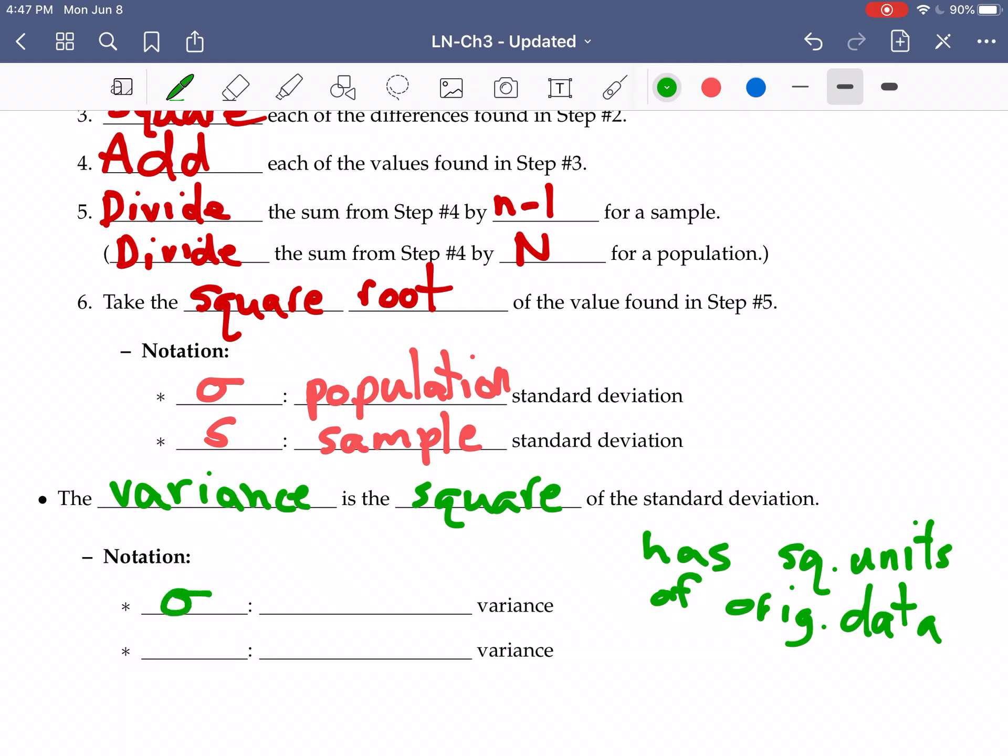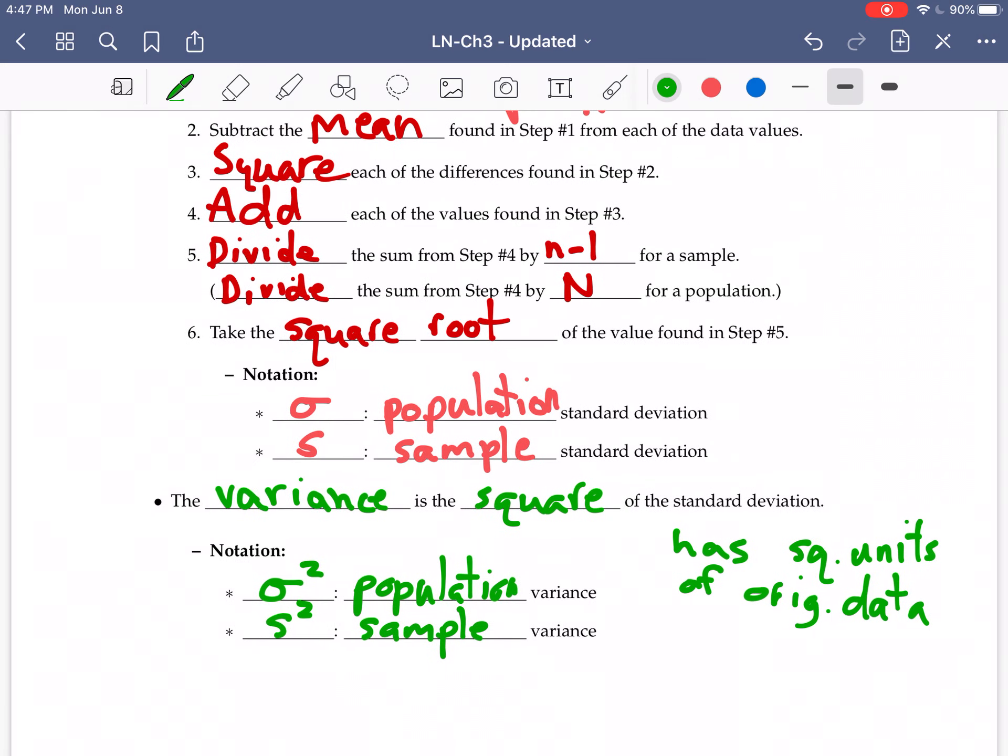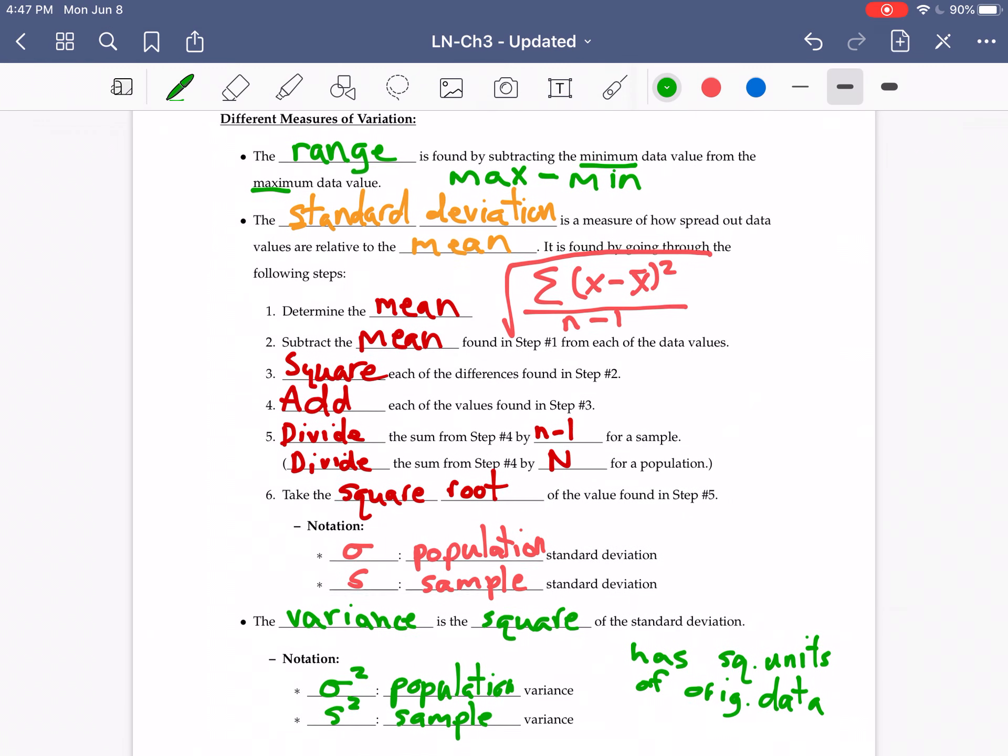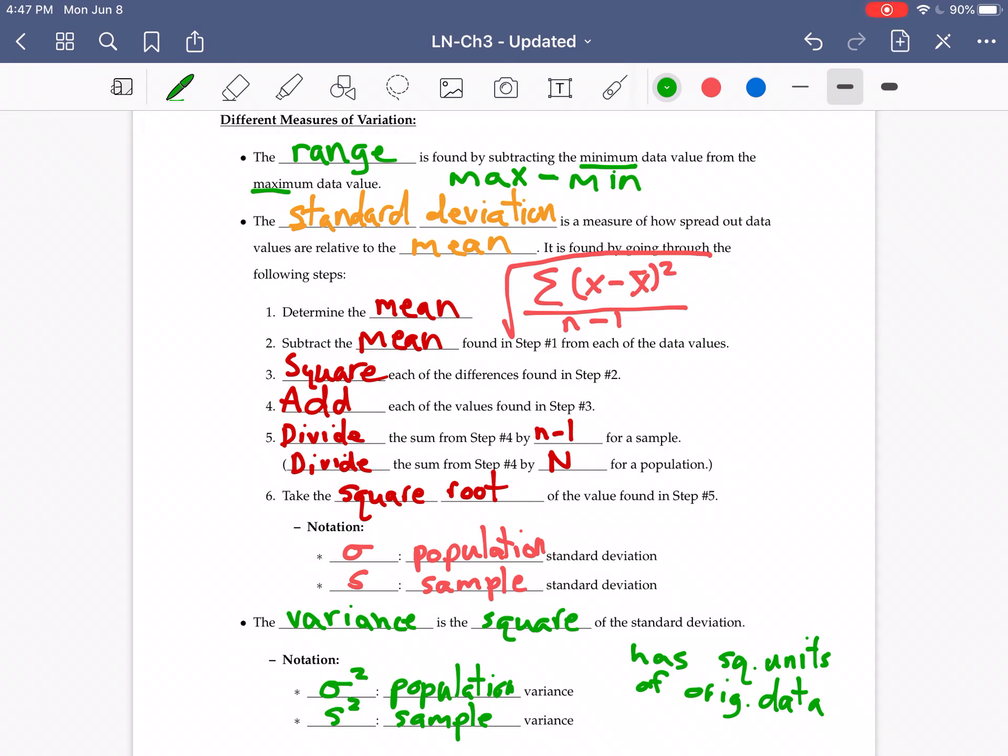Notationally, sigma squared is a population variance. So those are four measures of variation that we are going to be interested in. In our next video, we will look at going through an example of these. We will see you there.